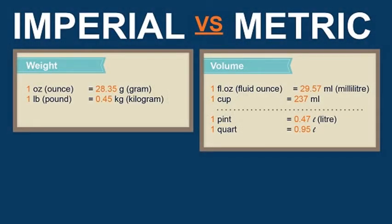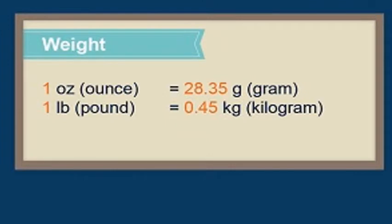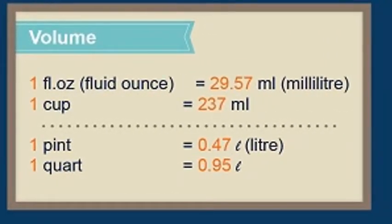To move from imperial to metric and metric to imperial, it's important to have keystone conversion values. For weight: one ounce equals 28.35 grams, or one pound equals 0.45 kilograms. For volume: one fluid ounce equals 29.57 milliliters, or one cup equals 237 milliliters. You can use these to move from a gallon of water all the way to a liter by going from gallon to cup, cup to milliliter, and milliliter to liter.